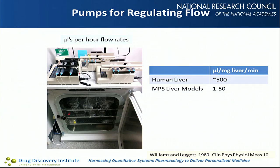A critical aspect is regulating flow. It's been demonstrated that physiologically relevant flow improves all physiological parameters, whether biochemical production or other activities. In the human liver, it's about 500 microliters per milligram liver per minute in terms of flow. In our MPS devices, we're studying a range of about 1 to 50, trying to understand the pros and cons of different flow amounts.